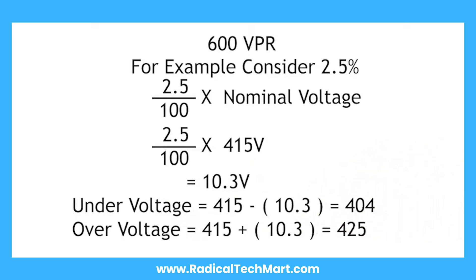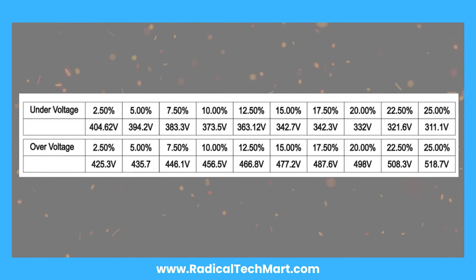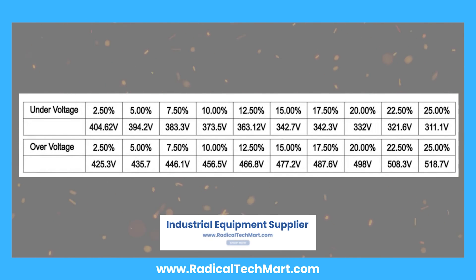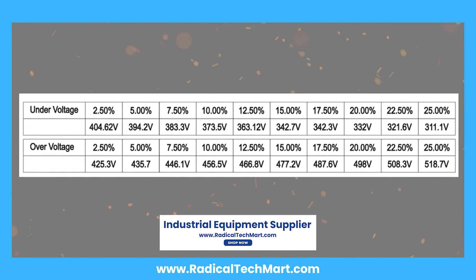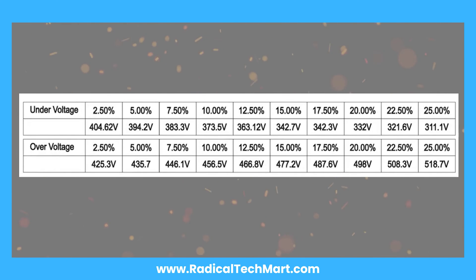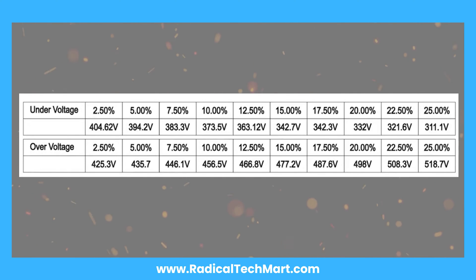Same way, you can calculate your under voltage and over voltage values from 2.5% to 25%. In this table, you can see the values: for 2.5%, under voltage is 404.6V, up to 25%, which is 311.1V. Over voltage value for 2.5% is 425.3V, up to 25%, which is 518.7V.